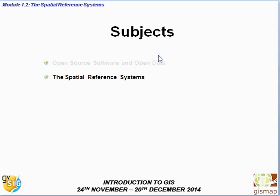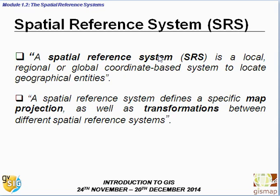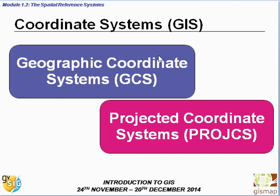Now let's speak about Spatial Reference Systems. Basically, a Spatial Reference System is a local, regional, or global coordinate-based system used to locate geographical entities. A spatial reference system defines a specific map projection, as well as transformations between different spatial reference systems. In GIS, we use two main systems: the Geographic Coordinate System and the Projected Coordinate System.